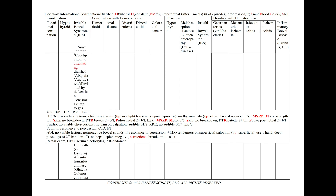In irritable bowel syndrome, we use the Rome criteria, which include constipation with alternating diarrhea, abdominal pain, and symptoms aggravated or alleviated by defecation. We can also see tenesmus, or the urge to go. Our workup for IBS focuses on ruling out other conditions, so we'll order a hydrogen breath test to rule out lactose intolerance and antibodies to anti-transglutaminase to rule out gluten enteropathy.